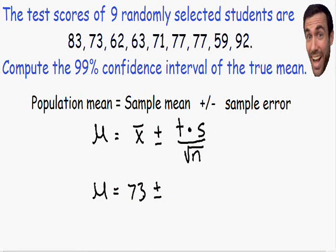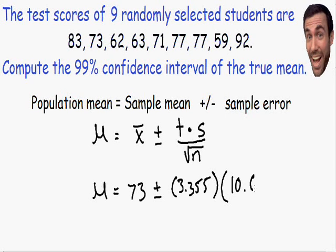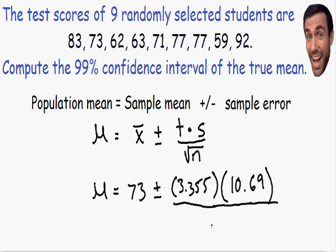Going back to our example, we have a t value of 3.355 multiplied by the standard deviation of the sample. Plugging all the test scores into a calculator gives a sample standard deviation of 10.69. This is all divided by the square root of the sample size — we have n = 9, so divided by the square root of 9.